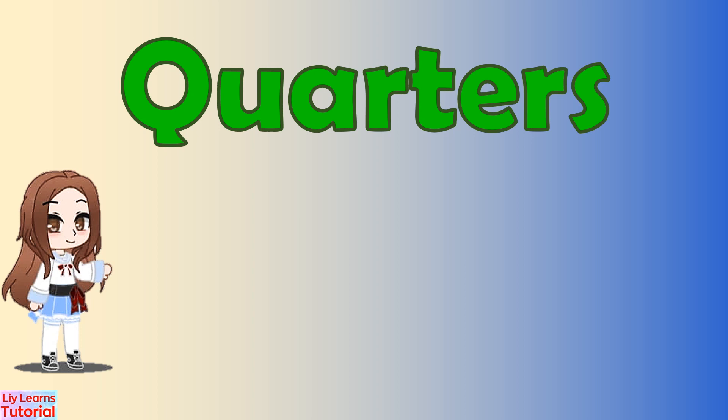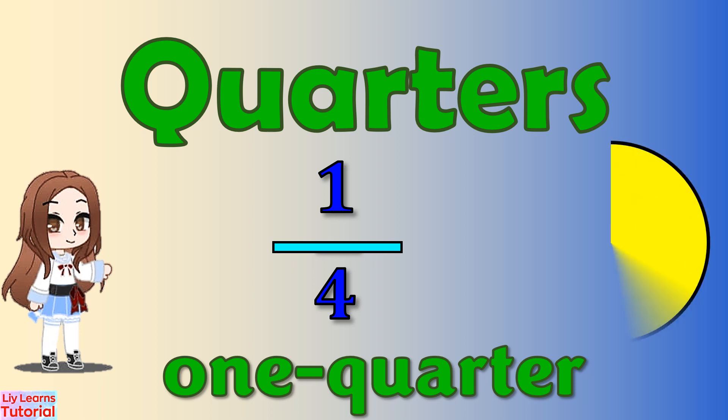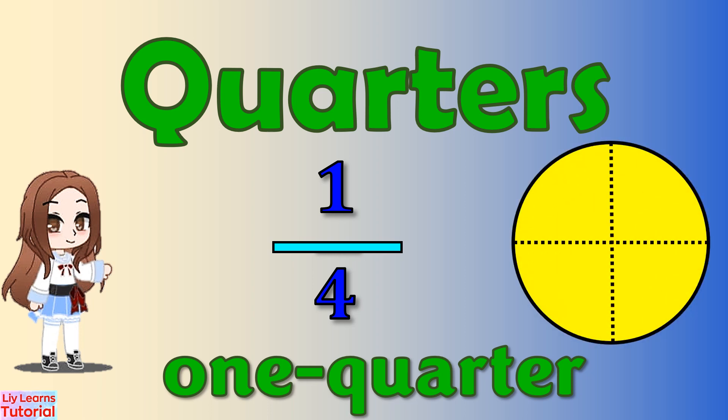In this topic, we will focus on naming a quarter as one of four equal parts of an object. In short, we will discuss one quarter of a shape or a quantity. Splitting a whole thing into four equal parts gives a quarter.